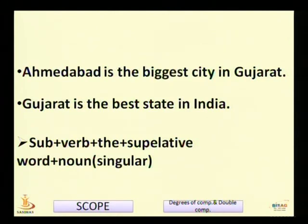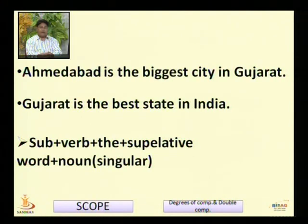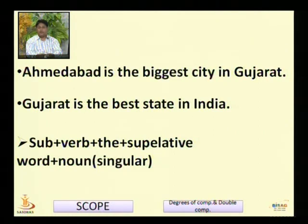See the example: 'Ahmedabad is the biggest city in Gujarat.' In superlative degree, the sentence pattern is: subject + verb + definite article 'the' + superlative word + noun in singular form. There are two types of superlative degree: one with the definite article 'the' and the superlative word, and another with 'one of the' and the superlative word.